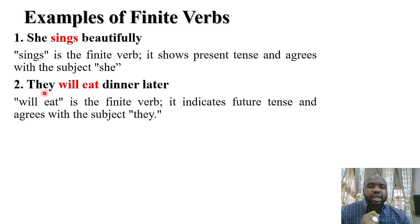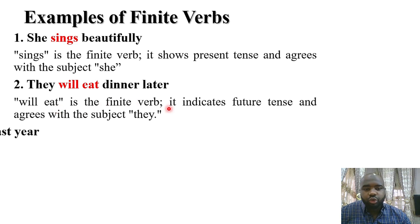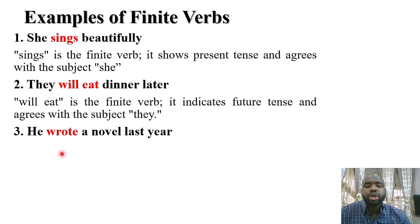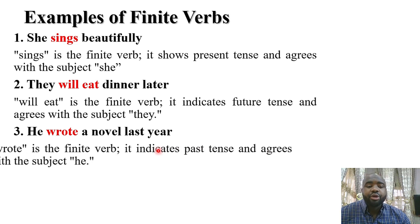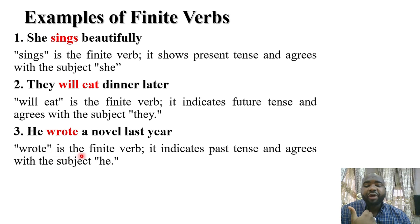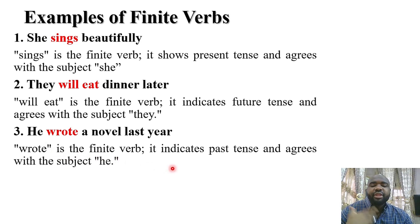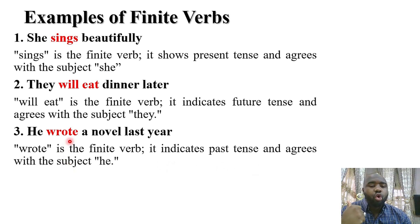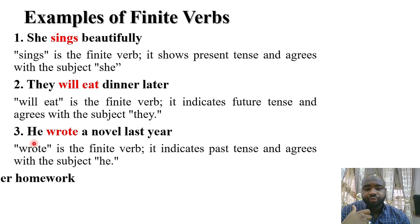Example three: 'He wrote a novel last year.' The verb 'wrote' is a finite verb which indicates past tense — something that has happened in the past. 'Wrote' also agrees with the subject 'he,' which is a pronoun.